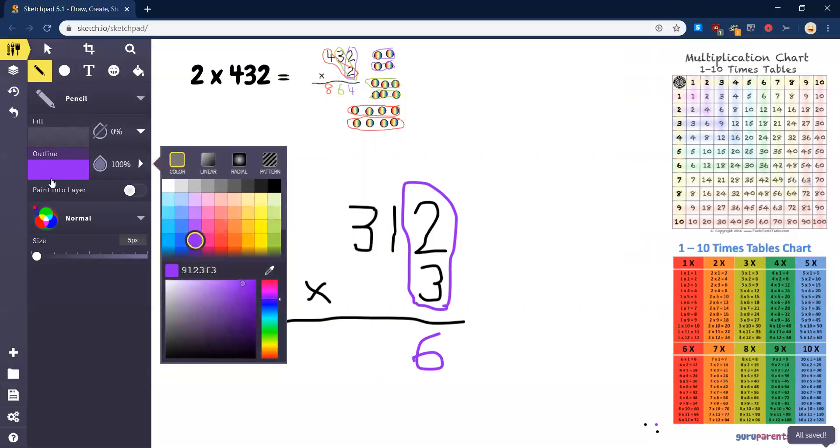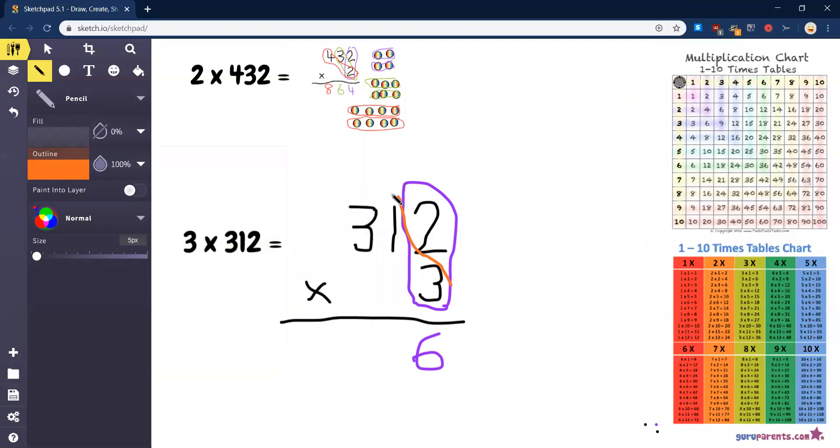Three times one. So for this one, it's going to be three times one. Those two numbers there. Three times one is three. I'm going to put the three in there. Right underneath the one. Try to keep those columns going.